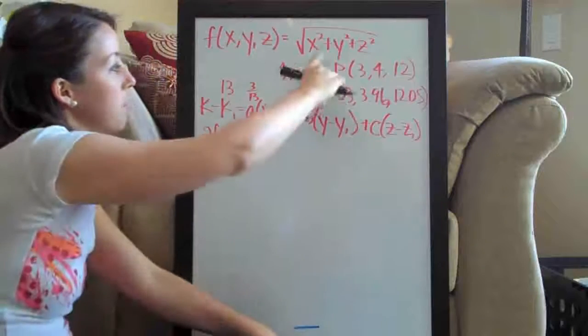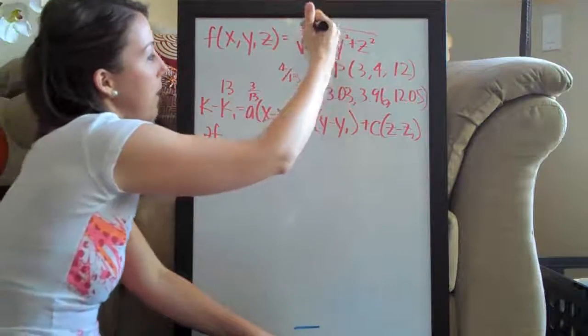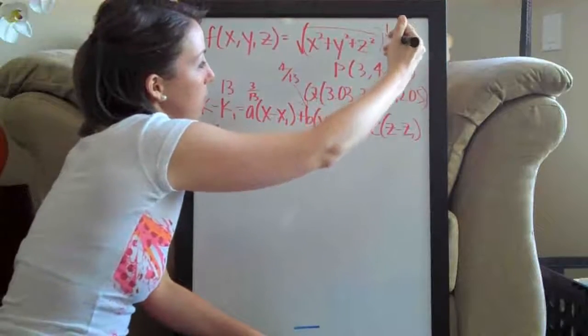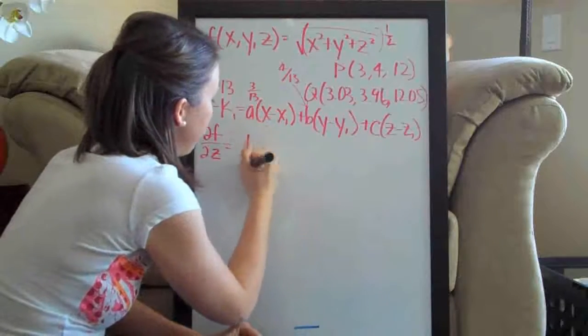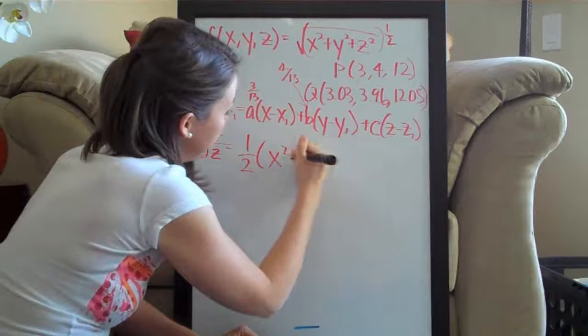Which again is going to be the same thing. Pretend that instead of square root we've got to the one-half here. So we're going to go ahead and bring the one-half out in front, leave the center intact.